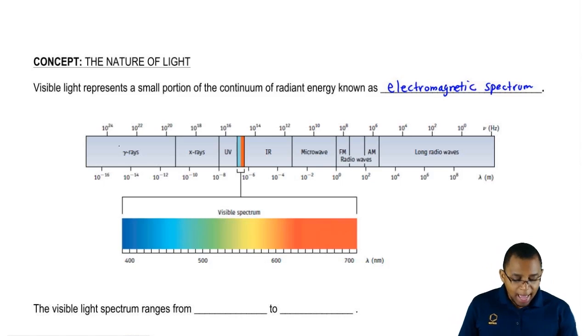You should see that we have here gamma rays, we have x-rays, UV, and here this is infrared, IR. Now between UV which is ultraviolet light and IR which is infrared light, that's where we find our visible light spectrum.